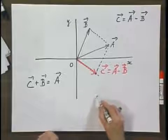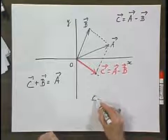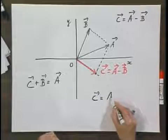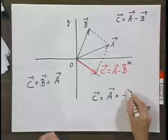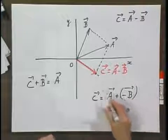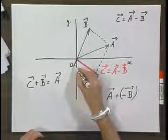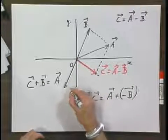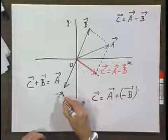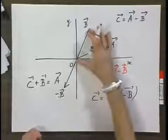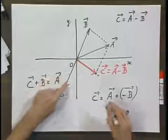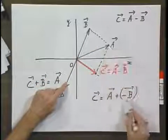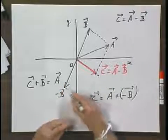Another way of doing it is saying, aha, C is also A plus minus B. So minus B is this vector, the same as this one but 180 degrees flipped over. Now I have to add this vector to A to find C. Well, there we go. I make a parallelogram.